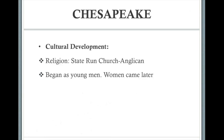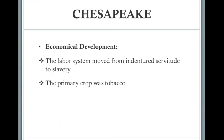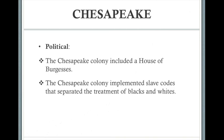With respect to the developments in the Chesapeake: the cultural development included religion, which was a state-run Anglican church. The Chesapeake was mostly made up of men — women came later. Economically, the labor system moved from indentured servitude to slavery, and the primary crop was tobacco. Politically, the Chesapeake colony included a House of Burgesses, and implemented slave codes that separated the treatment of blacks and whites.